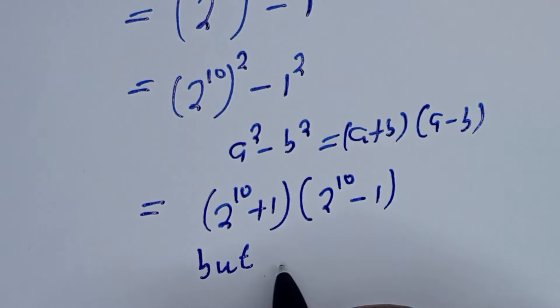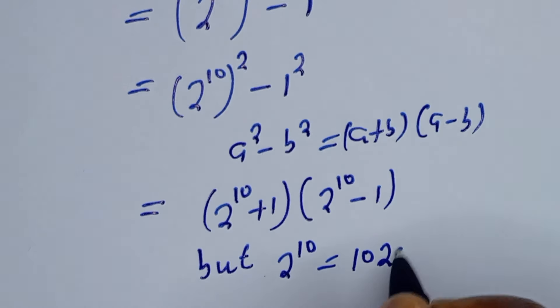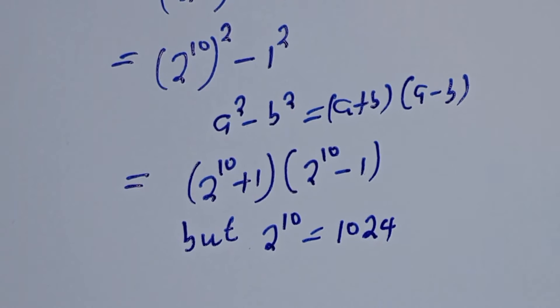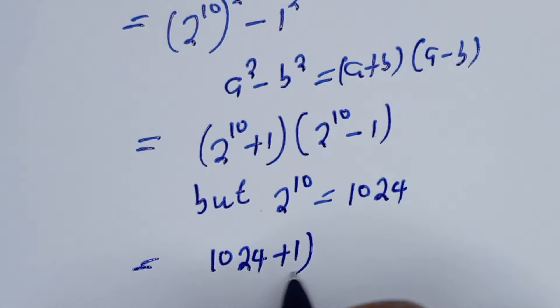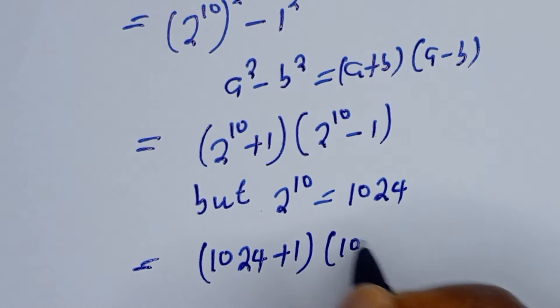But 2 to the power of 10 is equal to 1024. Then here is 1024 plus 1 times 1024 minus 1.